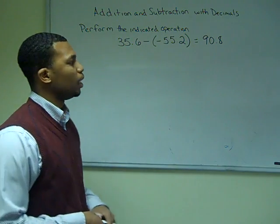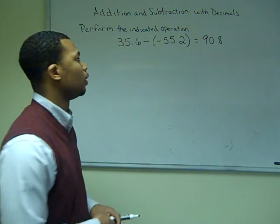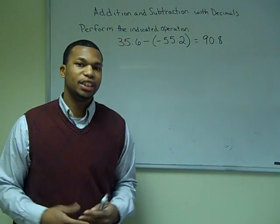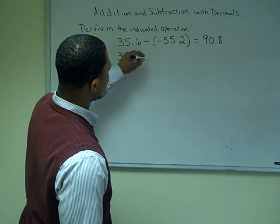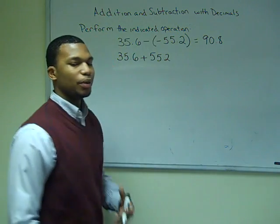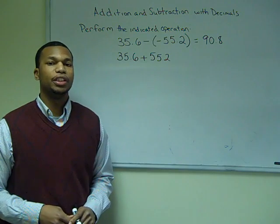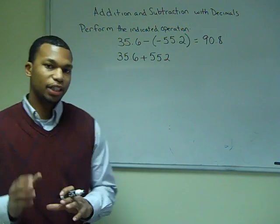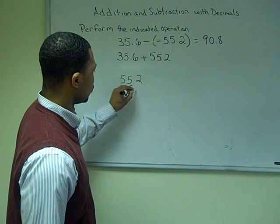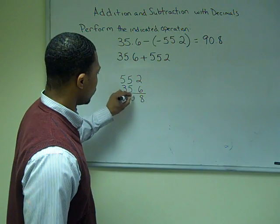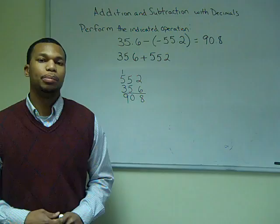In the next example, I have positive 35.6 and I'm subtracting negative 55.2. My final answer is positive 90.8. Since we're subtracting, remember that subtraction is the same as adding by the opposite. So we change the problem to positive 35.6 plus positive 55.2. Now the signs are the same, so we just add them. Adding the decimals gives us 90.8, and that's our final answer.